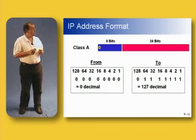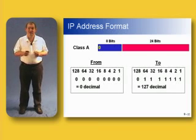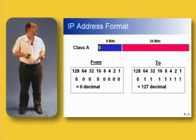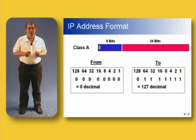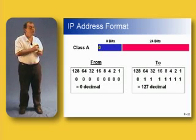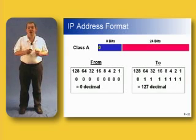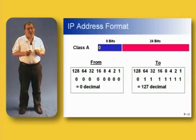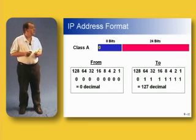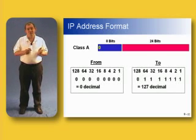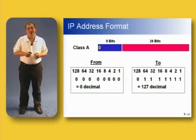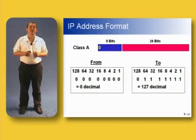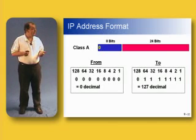Since we are forced to put a zero in the first bit position for a class A, let's look at the possible range of networks available. We can go from all zeros in the first eight bits to a zero followed by all ones. We can't change the first zero — that says this is a class A. Converting those into decimal, we get a range of network addresses from 0 up to 127. In other words, we've lost 128 of our possible network addresses, leaving us with 128 from zero to 127.